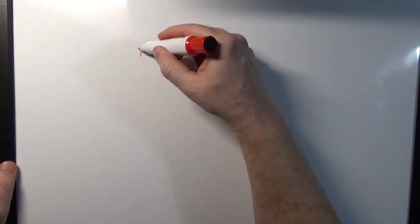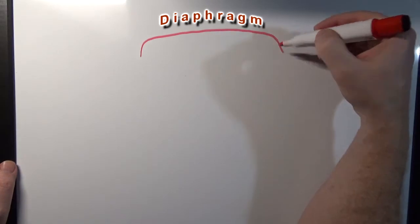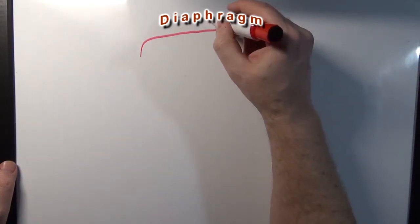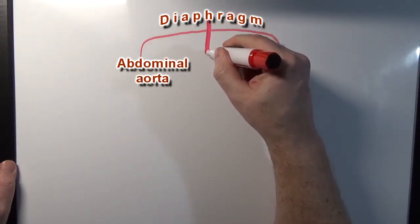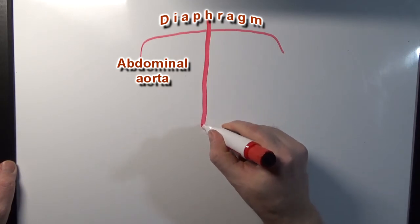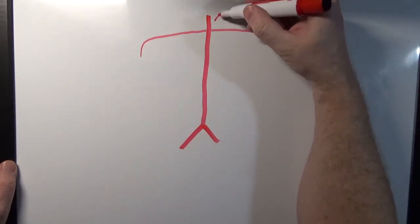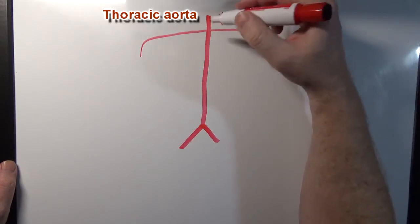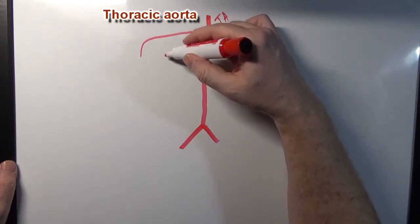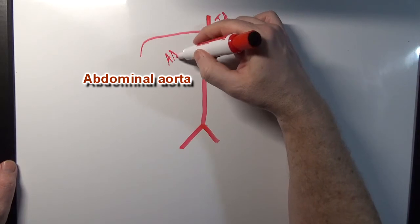Now, here's our diaphragm, and here is our abdominal aorta. Now, remember, this is the thoracic aorta, and then below the diaphragm we're going to have the abdominal aorta.